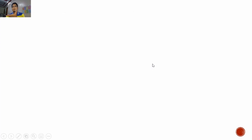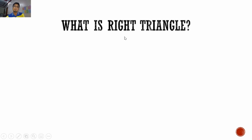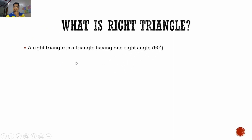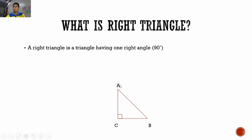Since we are talking about right triangles, we will start our lesson with a simple question: What is a right triangle? A right triangle is a triangle having one right angle, and the measure of one right angle is 90 degrees. We have here a triangle — it is a right triangle. Just like any other triangle, we can name it using the vertices. It doesn't matter if it's counterclockwise or clockwise, as long as they're consecutive — there are only three vertices anyway.